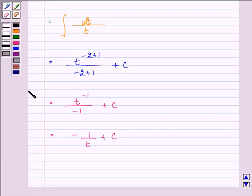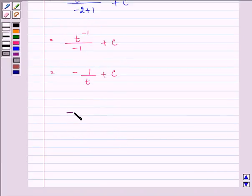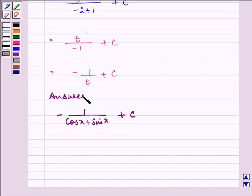Now in place of t, if we substitute the values, so we have minus 1 over, t was taken to be cos x plus sin x. So we have minus 1 over cos x plus sin x plus c and this will be the required answer to the question.